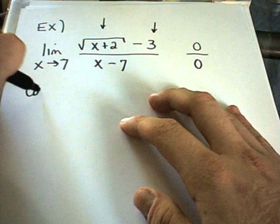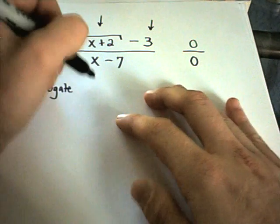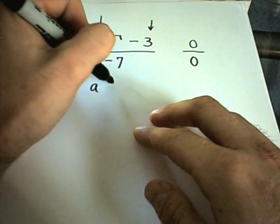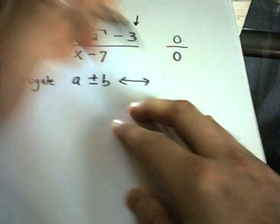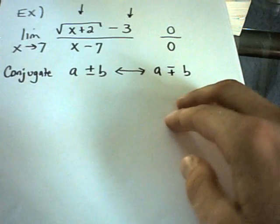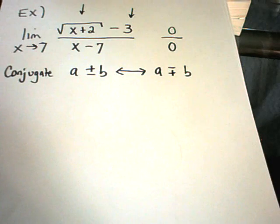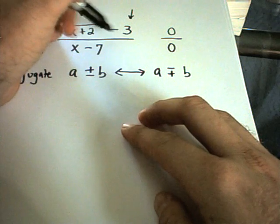The conjugate is basically, if you have something plus or minus something, the conjugate of that is the same thing except the sign is reversed. So in this case, the sign being a minus,